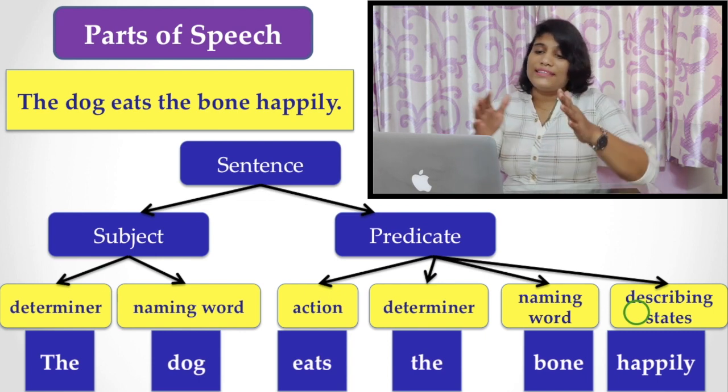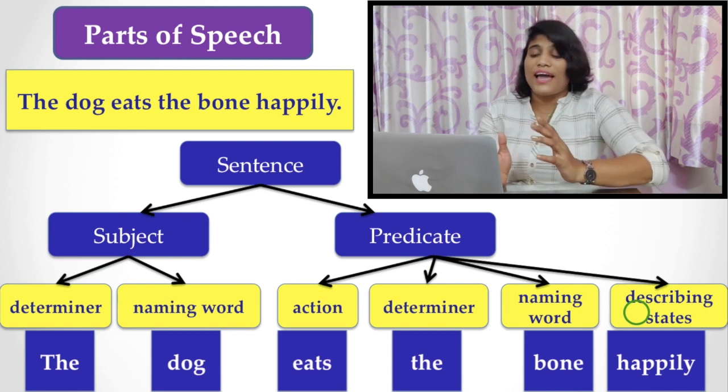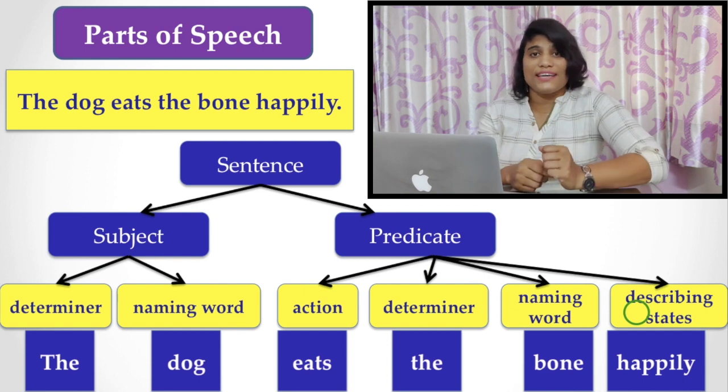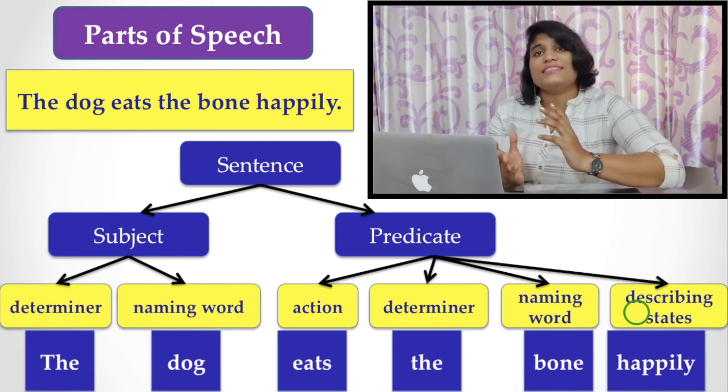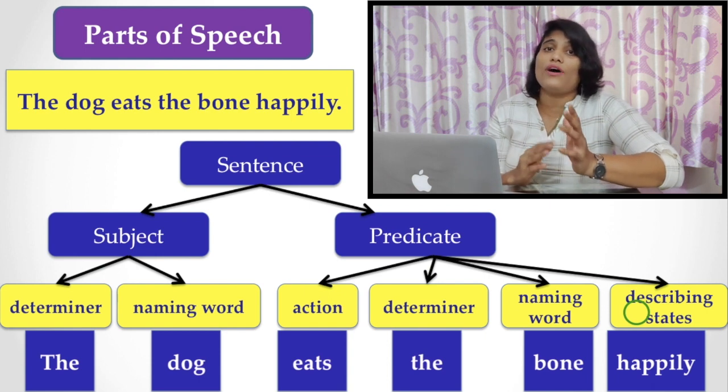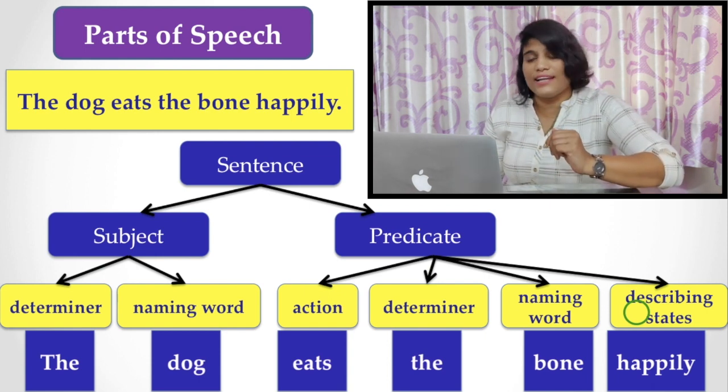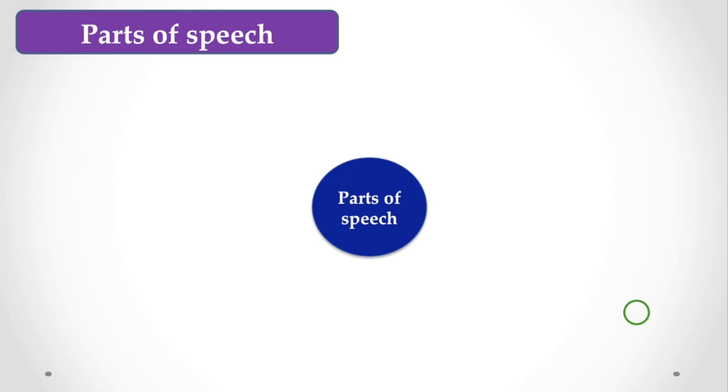So in this sentence you find these words signified something and they are named something else. So let's see in English language what do we call these words. Let's see now. So, parts of speech.